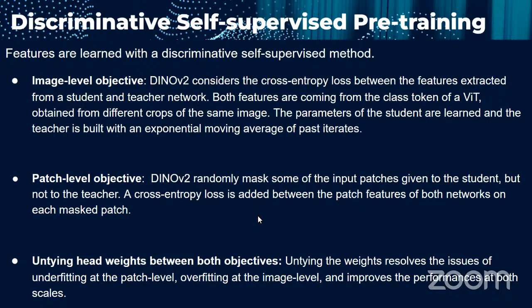The second objective is the patch-level objective. Here DINOv2 randomly masks some input patches given to the student but not to the teacher. A cross-entropy loss is added between the patch features of both networks on each matched patch. Third is untying the head weights between both objectives — the image-level and patch-level. Untying the weights resolves issues of underfitting at the patch level and overfitting at the image level, and improves performance at both scales.